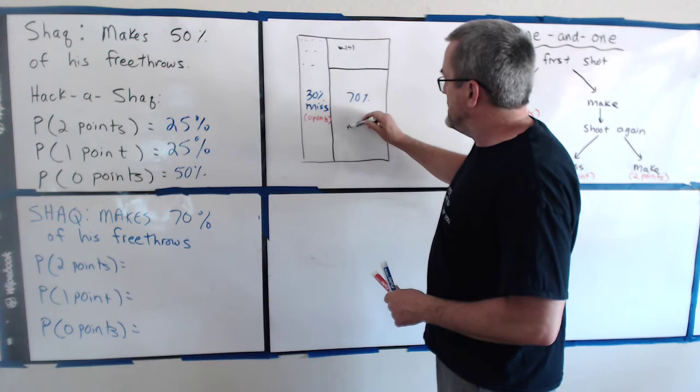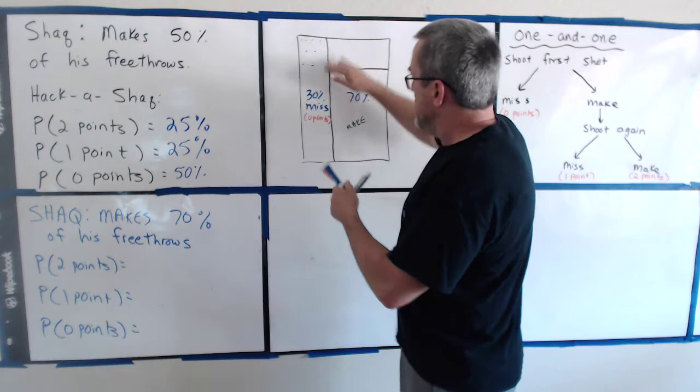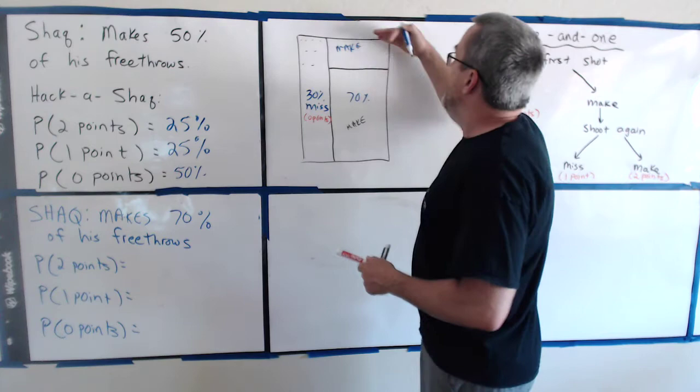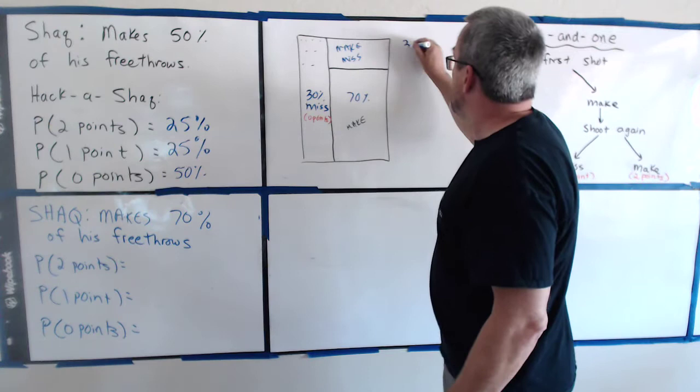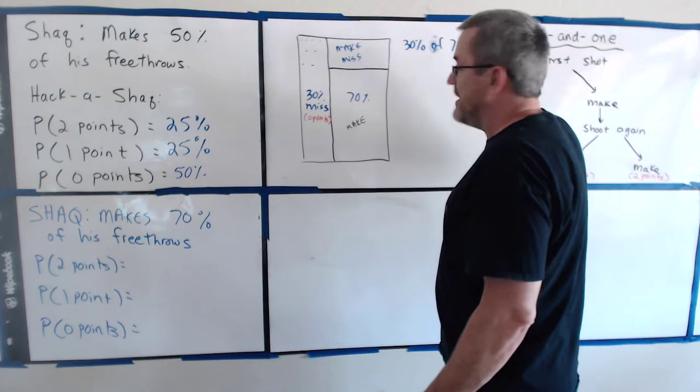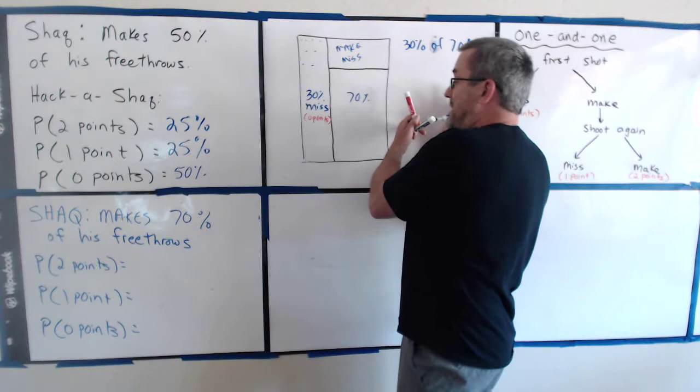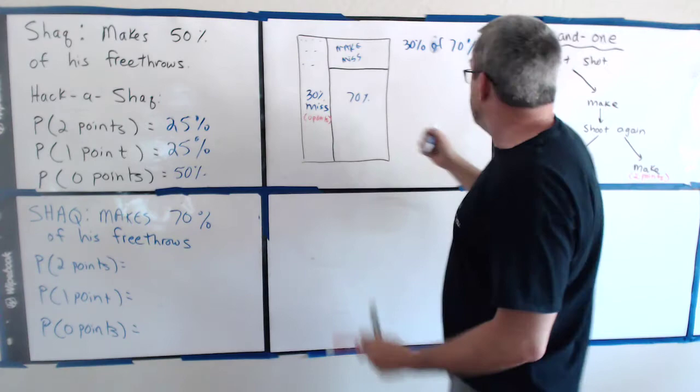And so what this one up here represents is he made the first shot 70% of the time. And then of those makes, he misses 30% of the time. And now listen to that. It's of the 70% he misses 30%. He misses 30% of the 70%. And then down here, this is the case where 70% of the time he makes, and then on that 70% make side, he makes again. So it's a make-make situation.